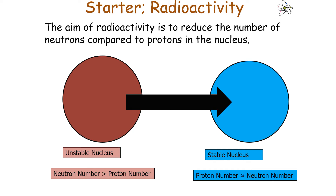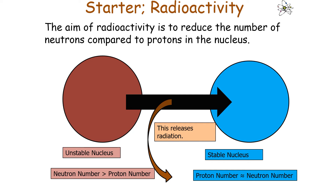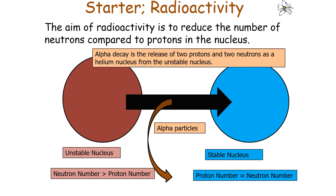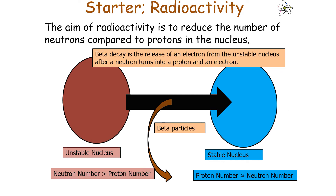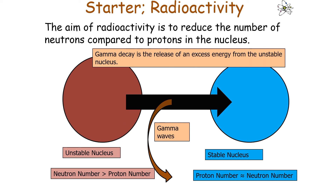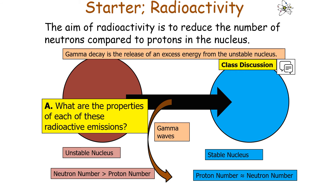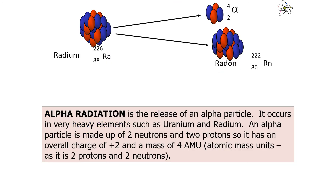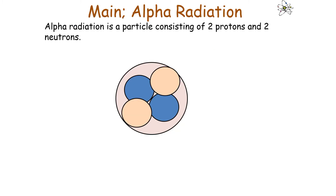The aim of radioactivity is to reduce the number of neutrons compared to protons in the nucleus. Stable nuclei are achieved when the proton number is approximately the same as the neutron number, so this process of changing the number of neutrons compared to protons releases radiation. Alpha decay is the release of 2 protons and 2 neutrons as a helium nucleus from the unstable nucleus. Beta decay is the release of an electron from the unstable nucleus after a neutron has turned into a proton and that electron. Gamma decay is the release of excess energy from the unstable nucleus.